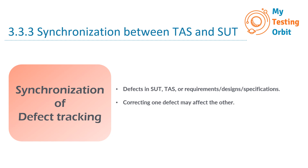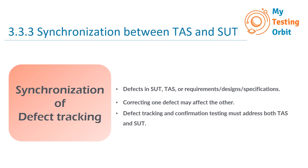The next point is that correcting one defect may affect the other. When we identify and resolve a defect in one area, it can sometimes have consequences or impacts on the others — like a ripple effect in a pond. The solution is that defect tracking and confirmation testing must address both TAS and SUT, since they are interconnected. We also need to conduct confirmation testing to ensure our fixes are working as intended, which involves retesting the areas where defects were found to confirm they have been properly fixed.